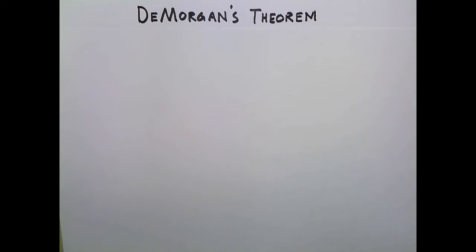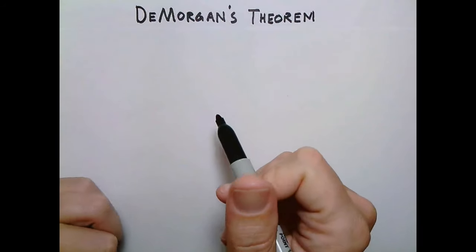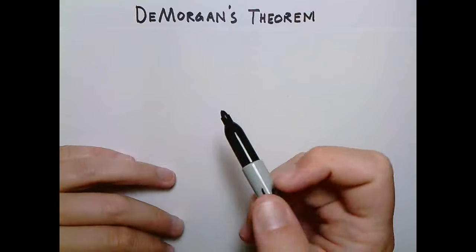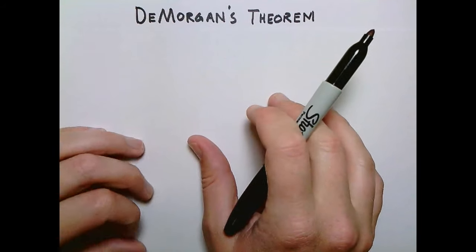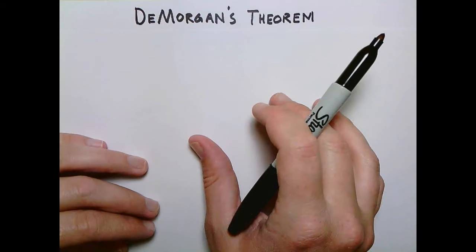Hey guys, welcome to your, what is this, thirteenth digital design lesson. In this lesson we're going to talk about DeMorgan's Theorem, which is a very special Boolean algebra identity, so special that it gets its own lesson video.